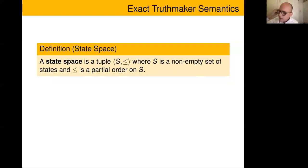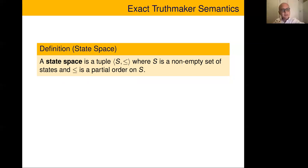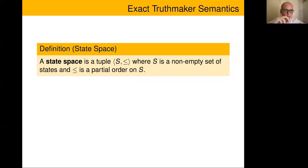Now, in the remaining time, I'll introduce the truth maker approach and show there are at least six different ways to go. I'll then say something quickly about how the logics work out. I'm hoping everyone has seen truth maker semantics before. I'll start with Fine's truth maker semantics basics and then give the extension.